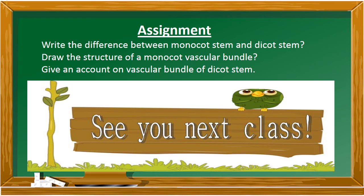Today's assignment: write the difference between monocot stem and dicot stem; draw the structure of a monocot vascular bundle; give an account on vascular bundle of dicot stem. Answer these three questions in your science notebook, get it signed with today's date by your parent, and submit it on the reopening day.